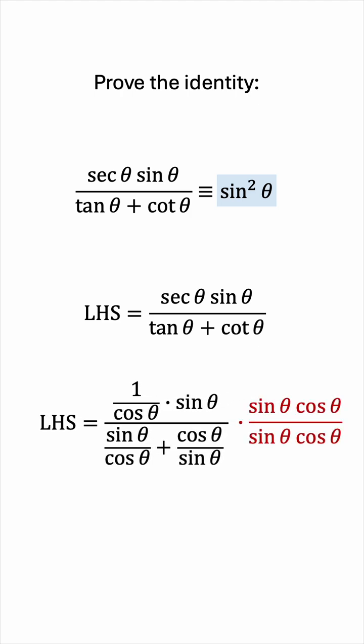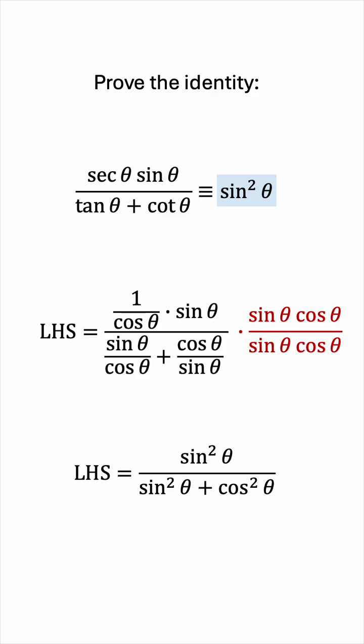Doing so we get sine squared over sine squared plus cosine squared. Of course the denominator is just 1. So the left hand side is sine squared which is identical to the right hand side. And that completes the proof.